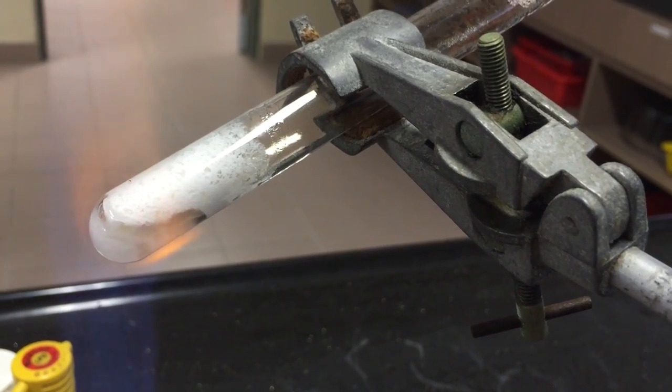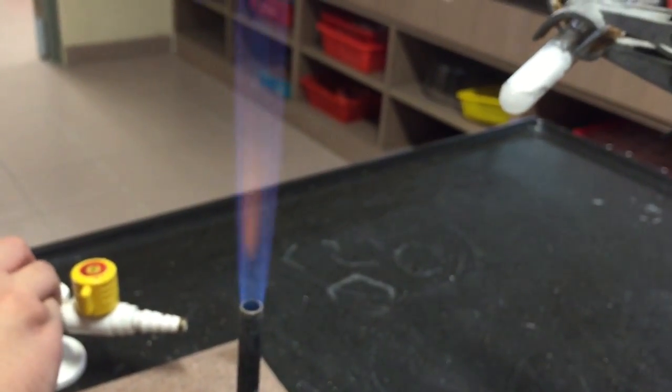Once you see that the bubbling is stopping, it shows that all of the water has been forced out of the calcium nitrate crystals. You can then proceed to strong heating.